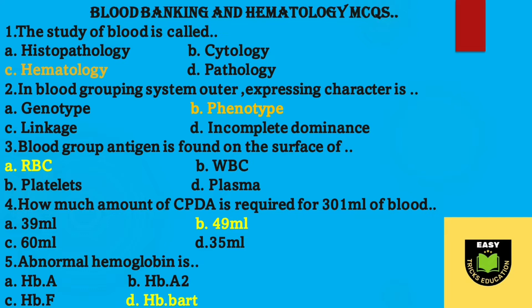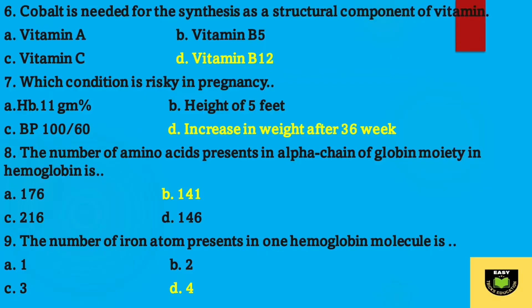Question number four: how much amount of CPDA is required for 301 milliliters of blood? Correct answer is option B, 49 milliliters. Question number five: abnormal hemoglobin is — option D, hemoglobin Bart is the correct answer.